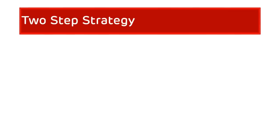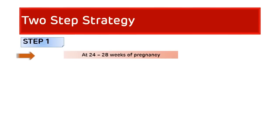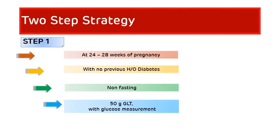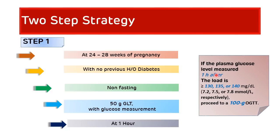The two-step strategy has two steps. In step one, done during the 24th to 28th weeks of pregnancy with no previous history of diabetes, 50 grams of glucose is given to the patient and fasting is not required. A blood sample for glucose measurement is collected at one hour. If the plasma glucose level at one hour is greater than or equal to 130, 135, or 140 mg/dL, proceed to step two — an OGTT with 100 grams of glucose.